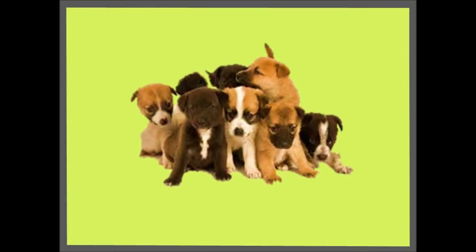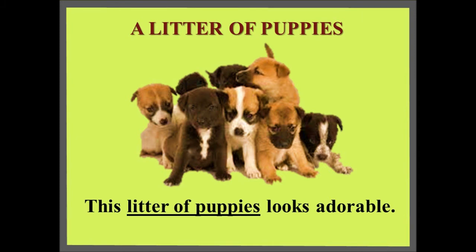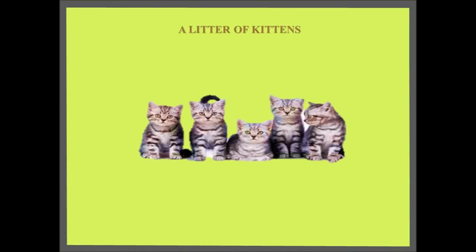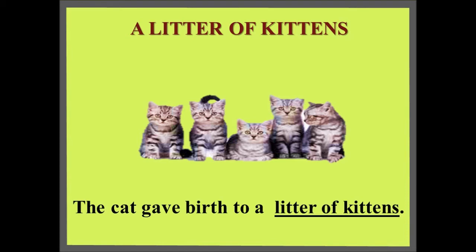Do you see a group of cute little puppies here? Do you know what their group is called? A litter — a litter of puppies. Sentence: This litter of puppies looks adorable. And guess what? A group of kittens is also called a litter. Sentence: The cat gave birth to a litter of kittens.